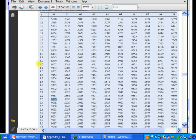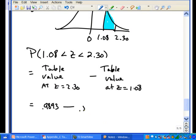0.9893 minus the value of 1.08. All right, so what we want to do now is grab our normal table. First we look up 1.0, and then we go across here and we find 0.08, and then we find where those two values intersect. It looks like it's going to be 0.8599.